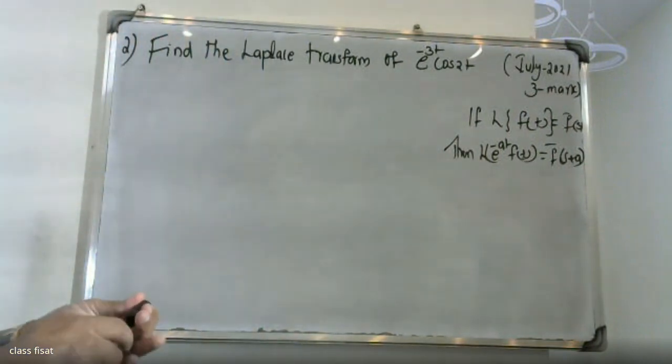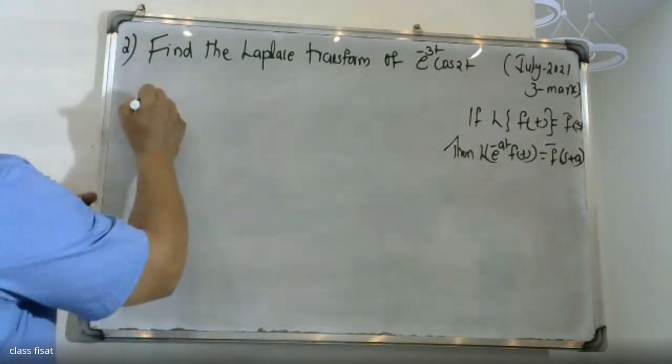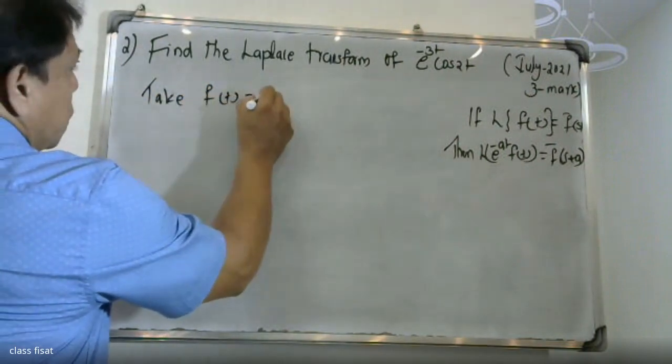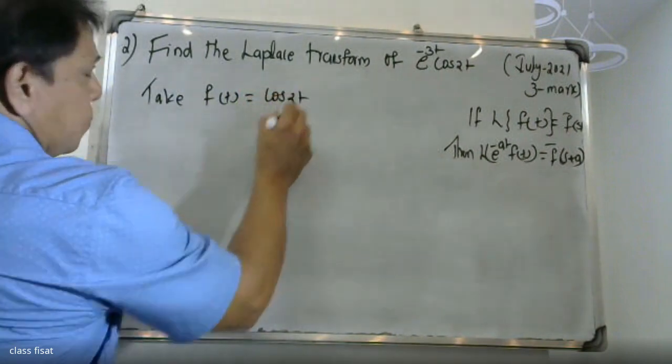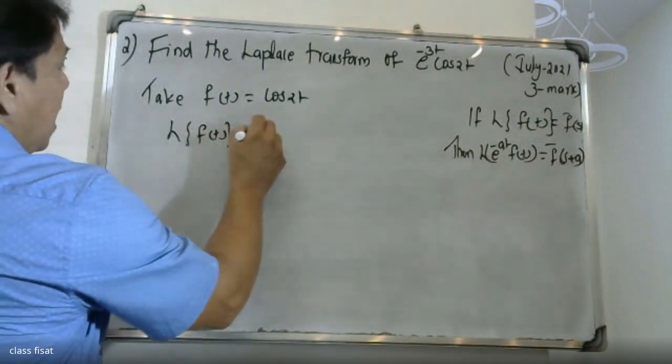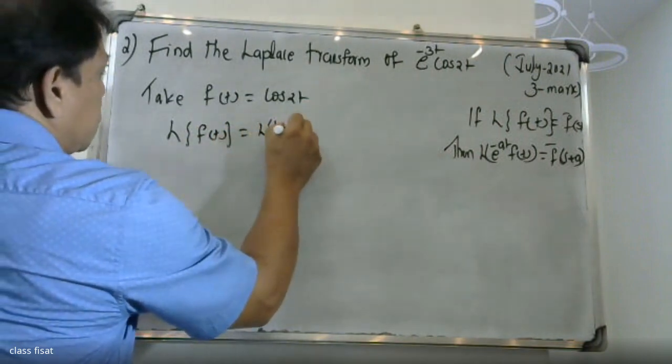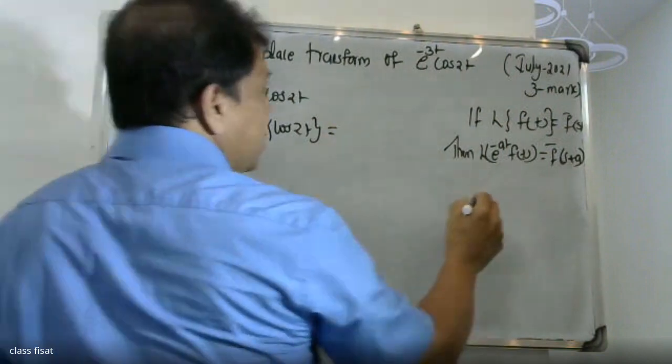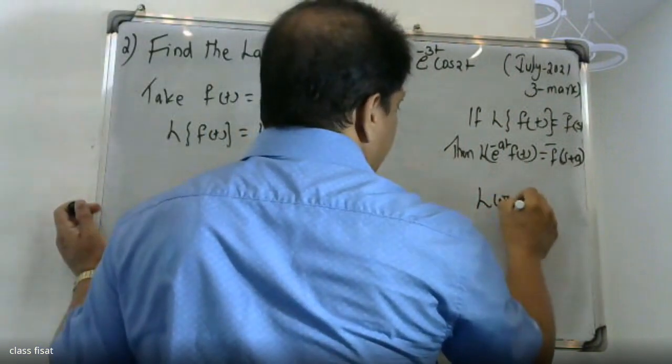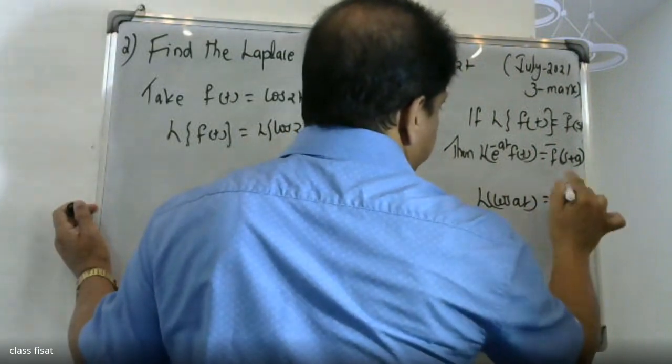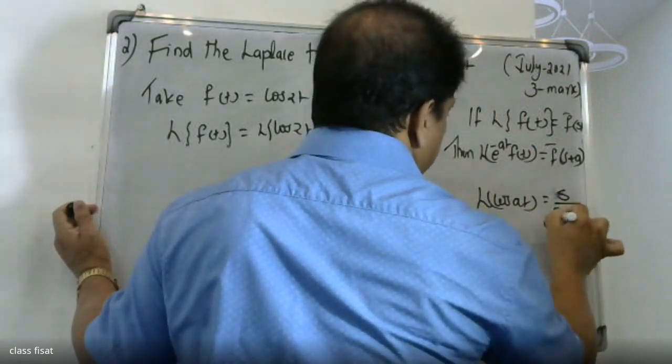We take f of t equals cos 2t. Then the Laplace transform of f of t, that is, Laplace transform of cos 2t, equals - using the formula for Laplace transform of cos at, which is s divided by s squared plus a squared.